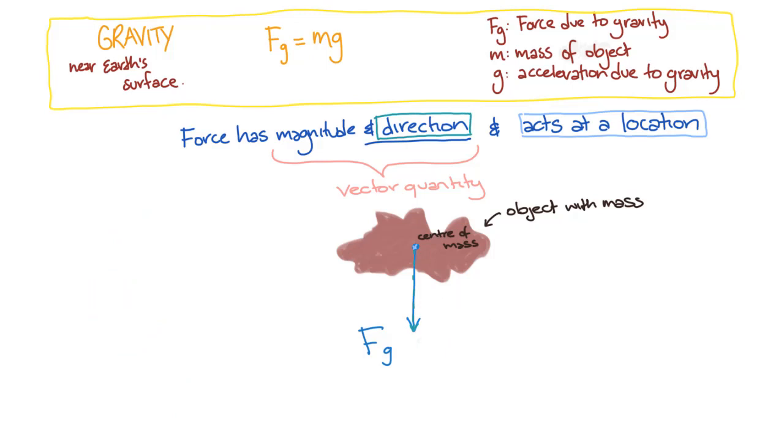The magnitude of the gravitational force near the Earth's surface is given by our equation, F equals mg, where F is the gravitational force, M is the mass of the object, and G is called the acceleration due to gravity.